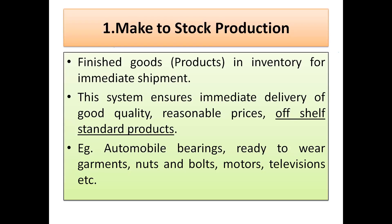Let us start with Make to Stock production. In this system, finished goods are available in inventory for immediate shipment. Ready-made finished goods are stocked in final inventory and can be shipped immediately. This system ensures immediate delivery of good quality products at reasonable prices. These are off-shelf standard products — meaning they are readily available and you can purchase them without placing a special order and waiting.